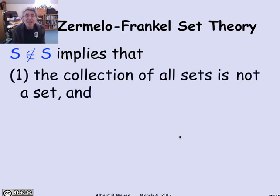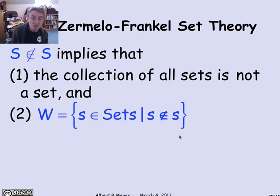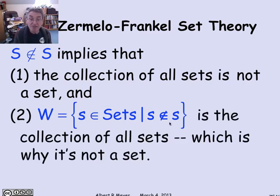Looking at the foundation axiom and the conclusion that no set is a member of itself, what we can immediately conclude is that, first of all, the collection of all sets can't be a set. Because if the collection of all sets was a set, then it would be a member of itself, and that's forbidden by the S can't be a member of S consequence of the foundation axiom. The second thing it tells us is, remember the set W from Russell's paradox. W was the collection of those sets which are not members of themselves. Now we've just figured out that this is all sets because no set is a member of itself. So the sets that are not members of themselves is everything. And that's why W is not a set and not a member of itself, which explains finally how the foundation axiom resolves the Russell paradox.